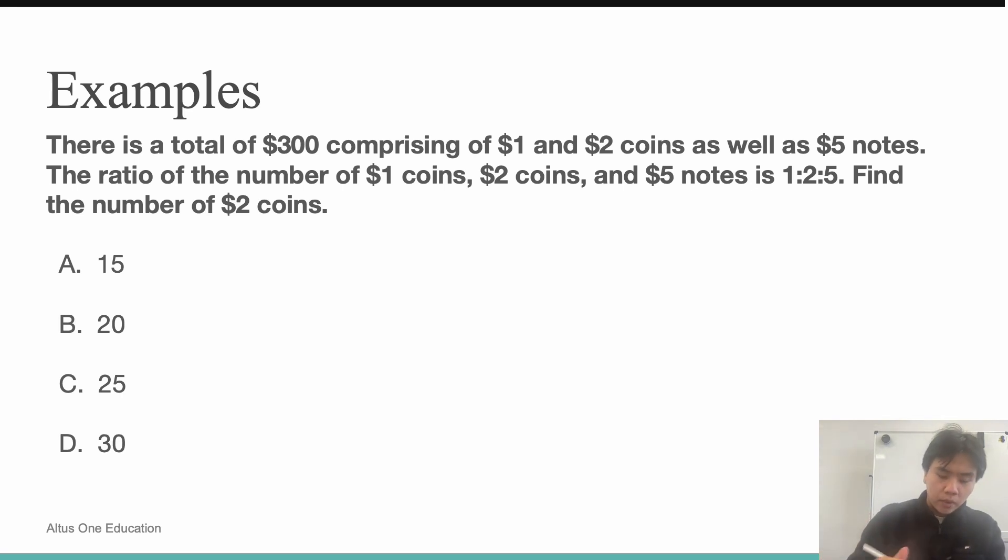So within this mini ratio, there is one $1 coin with a value of $1, two $2 coins with a value of $4, and five $5 notes, which is $25. If I add that up, that equals $30.